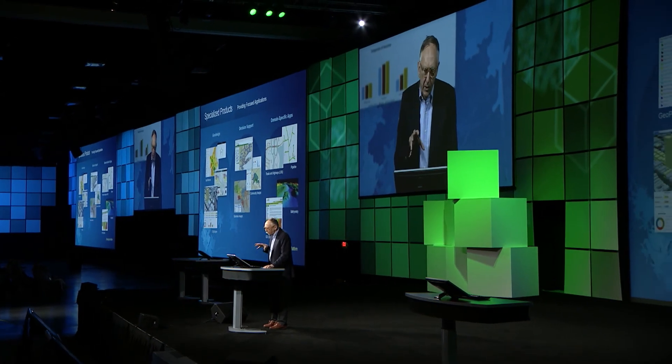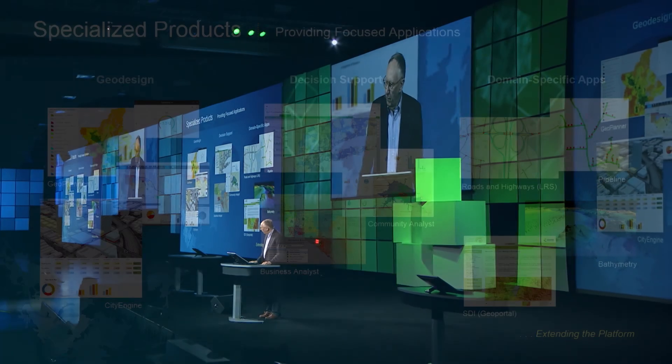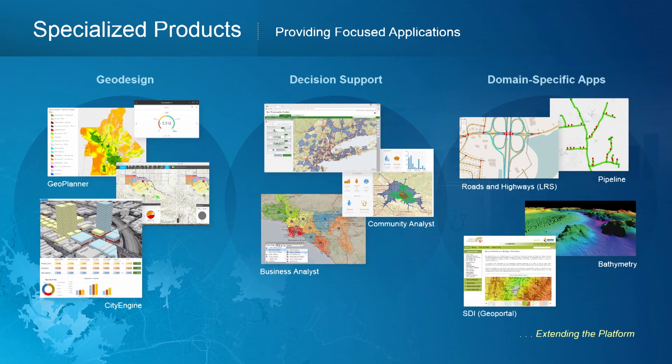Beyond ArcGIS, Esri supports a series of specialized products. These provide specialized applications for particular communities, including geo design, 2D and 3D planning, decision support by Community Analyst and Business Analyst, and then very specific domain areas like roads and highways, pipelines, bathymetry, and SDI portals. These are specialized areas that complement and extend the basic capabilities — they'll not be interesting to everybody in the audience, but certainly interesting to some of you.